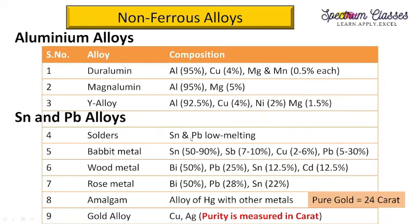Tin and lead alloys are low-melting alloys. Solder contains tin and lead — 's' for tin (Sn) and 'd' for lead (Pb). Babbit metal contains tin, lead, and antimony — you can remember it like the shoulder of a rabbit, where tin and lead are the main components. Wood's metal and Rose's metal are bismuth-lead alloys. Wood's metal additionally contains cadmium, while Rose's metal does not. All four alloys contain tin and lead, while Wood's and Rose's metals also contain bismuth.